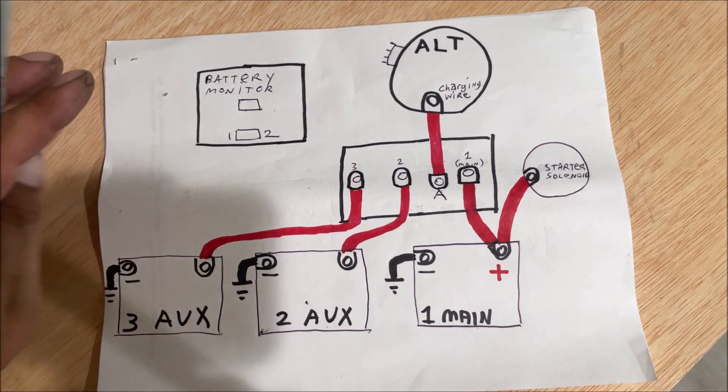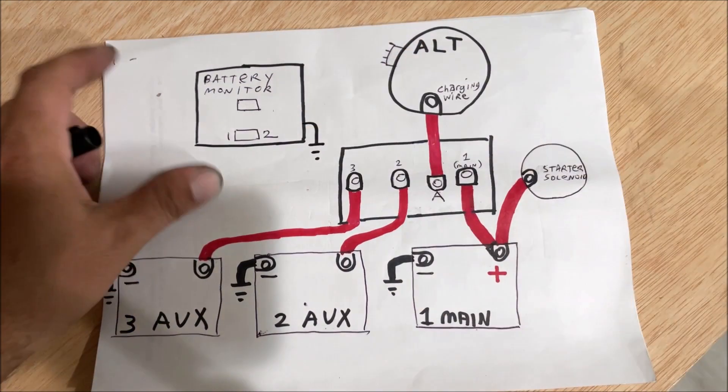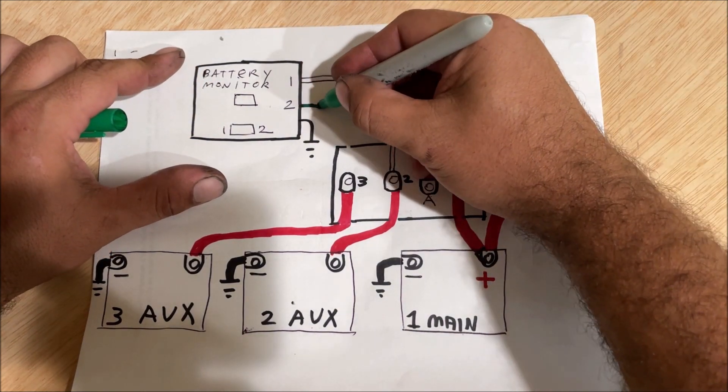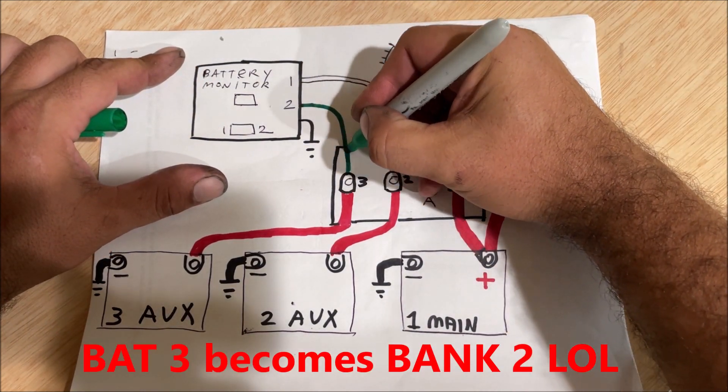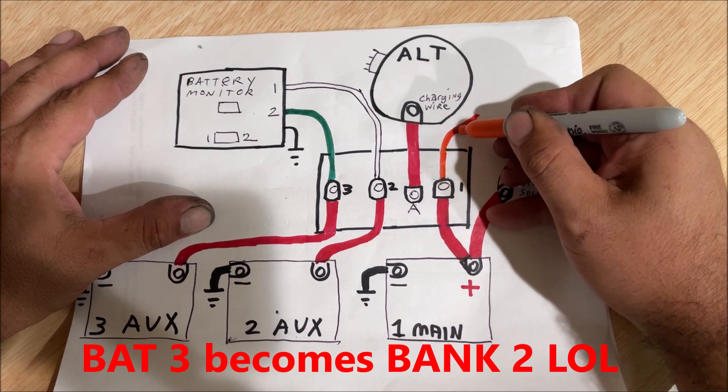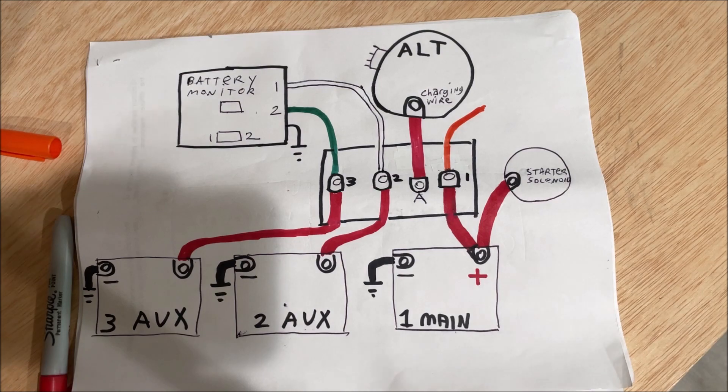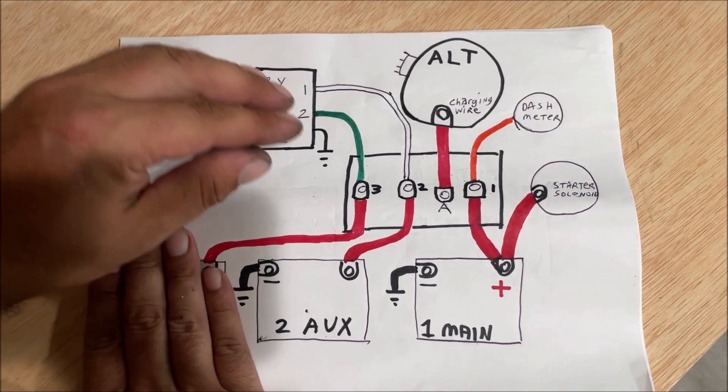So then we had that old battery monitor, you can't even buy that style anymore. And it had a switch for bank one and two. All this was was grounded. Okay so then of course bank one becomes battery two and then battery two becomes bank three. So in the vehicle we have a volt meter and a dummy charging light to monitor the voltage on our main battery one.